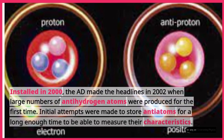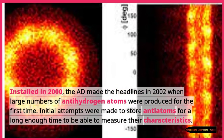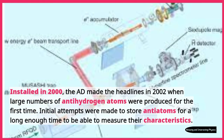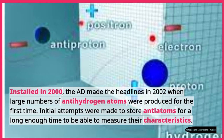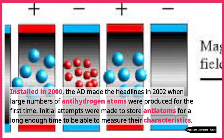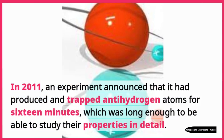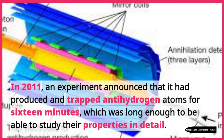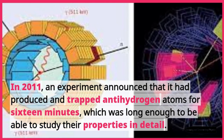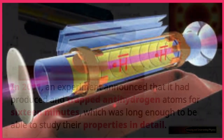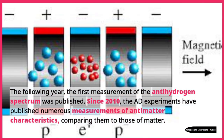Installed in 2000, the AD made the headlines in 2002 when large numbers of antihydrogen atoms were produced for the first time. Initial attempts were made to store anti-atoms for a long enough time to be able to measure their characteristics. In 2011, an experiment announced that it had produced and trapped antihydrogen atoms for 16 minutes, which was long enough to be able to study their properties in detail. The following year, the first measurement of the antihydrogen spectrum was published.